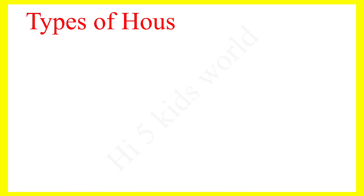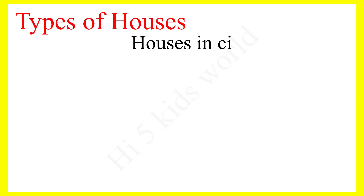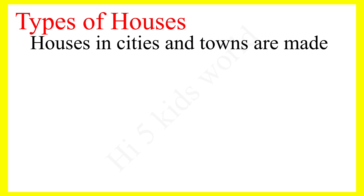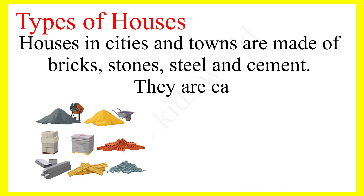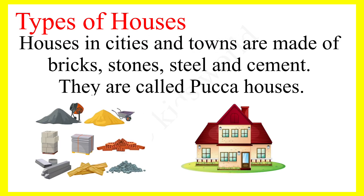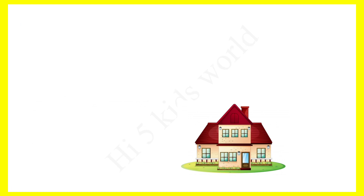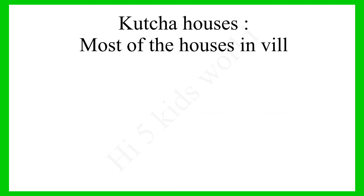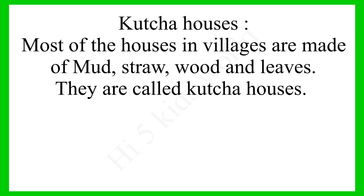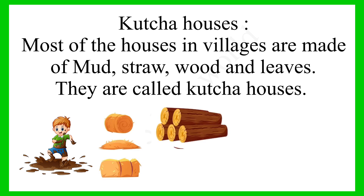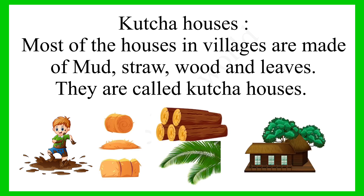Types of houses. Houses in cities and towns are made of bricks, stones, steel and cement. They are called paka houses. Most of the houses in villages are made of mud, straw, wood and leaves. They are called kacha houses.